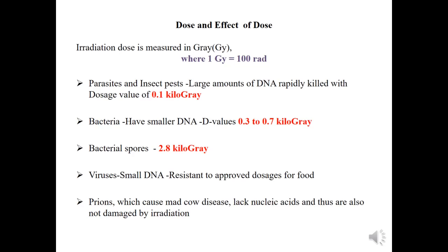Bacteria have smaller DNA and are more difficult to irradiate, requiring 0.3 to 0.7 kilogray. Bacterial spores have very small DNA and require approximately 2.8 kilogray. In the case of viruses, which also have small DNA, they are resistant to the approved dosage and are not killed by irradiation technology.